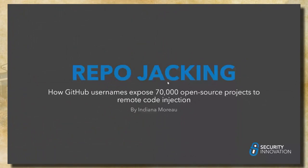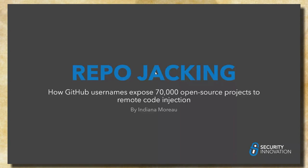Thank you very much, Laurent. Welcome, everyone. Welcome to my talk on repo jacking and how GitHub usernames expose a lot of open source products to remote code injection. Today we'll be talking about repo jacking, which is a novel dependency supply chain attack. We'll start by talking about supply chain attacks in general, then specifically repo jacking — the details, how to exploit it, how it came to be, how we scanned all of open source software for this vulnerability, how widespread it is, and remediations.